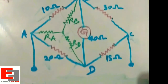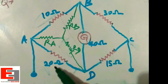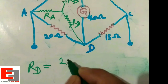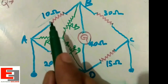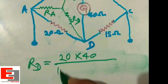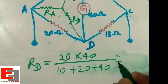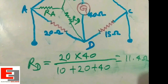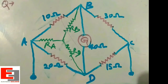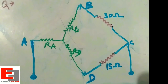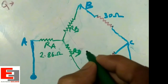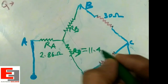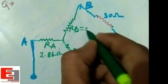RD has two adjacent arms of 20 ohm and 40 ohm, so RD = 20 × 40 divided by the sum of all three resistances of the delta (10 + 20 + 40), which equals 11.4 ohm. Now we have found all three resistances of the star: RA = 2.86 ohm, RD = 11.4 ohm, and RB = 5.72 ohm. We can now replace the delta.